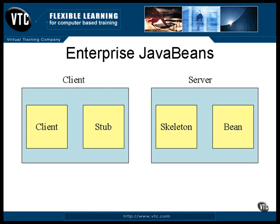This diagram shows the client program on the left. The client calls a method in the stub. This stub program is specially designed for this particular Bean. For example, if your Bean has a method named gimme5, a call to the method gimme5 will actually be in the stub. The stub form of the method does what is known as marshalling — that is, it converts the arguments to the method into a form that can be transmitted over a communications link and sends them to a method by the same name in the skeleton form of the Bean.